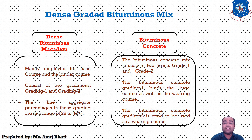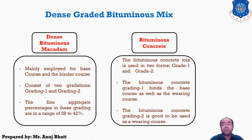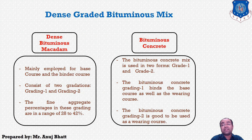Bituminous Concrete Grade 1 with nominal maximum size of 19 mm is used as the binder course, which binds the base course as well as the bearing course. Bituminous Concrete Grade 2 is very well suited as a bearing course to facilitate medium and low traffic. A Bituminous Concrete grade of nominal maximum aggregate size 9.5 mm was considered necessary for the construction of smooth and impermeable pavement in urban areas.